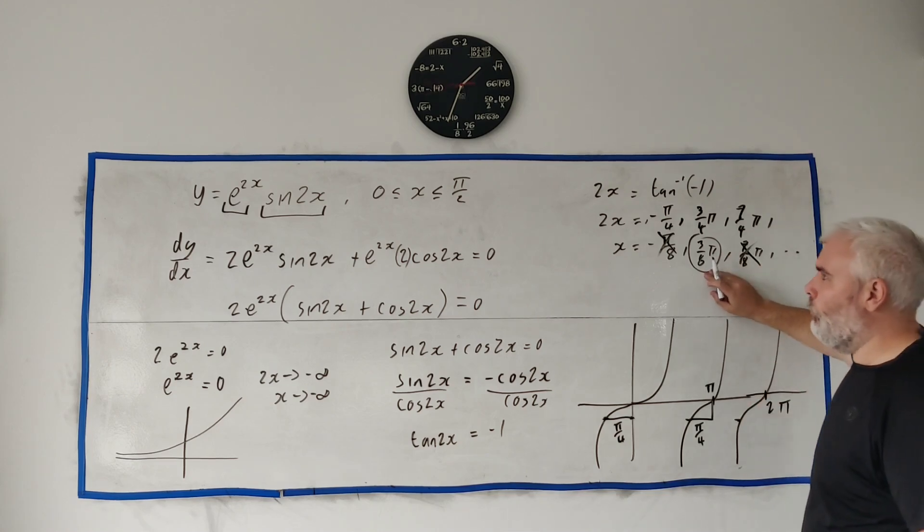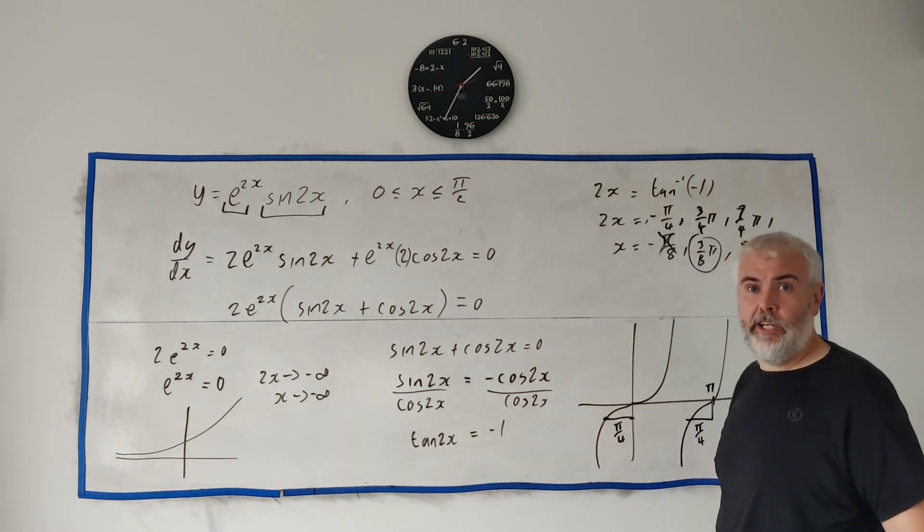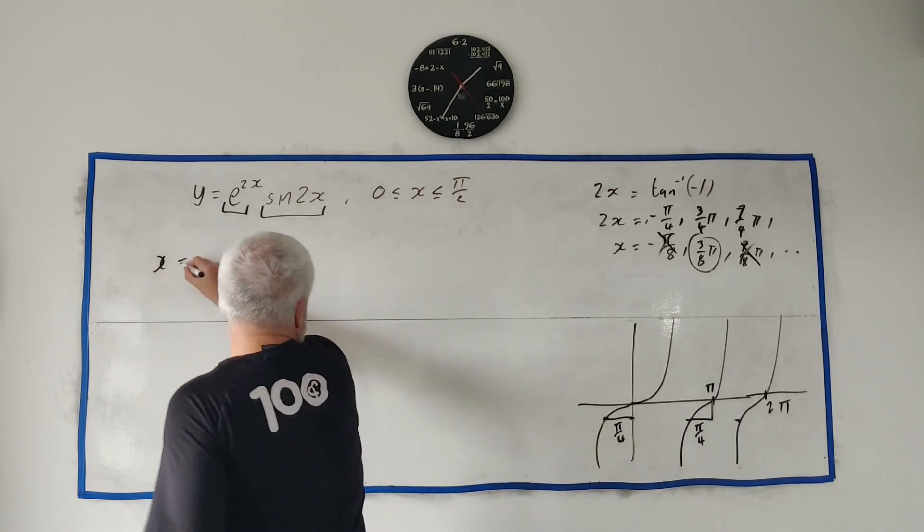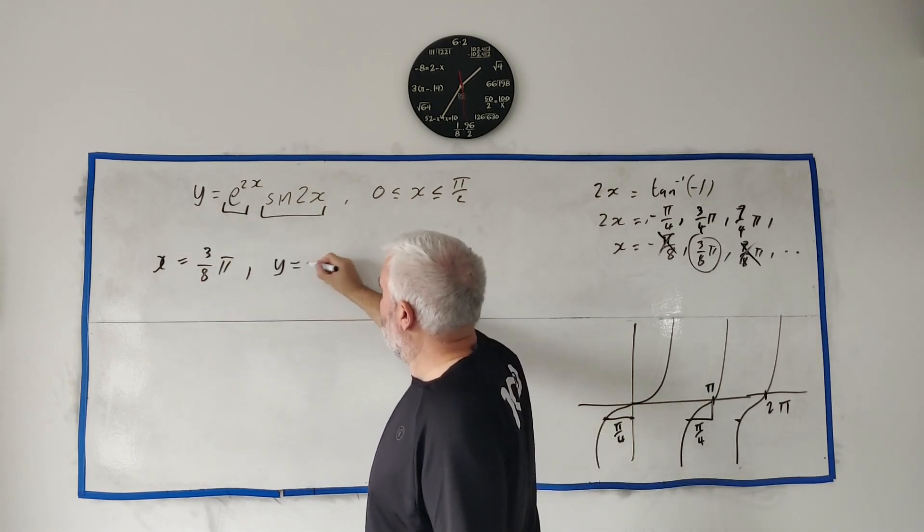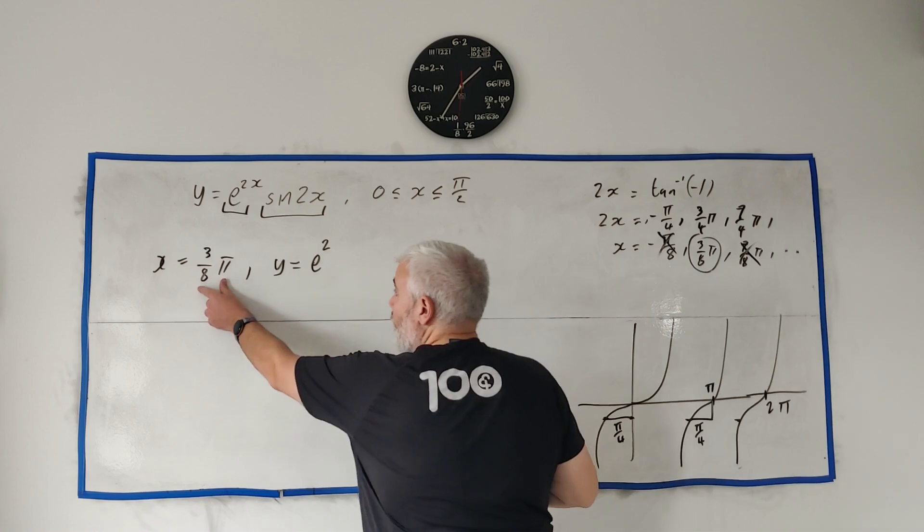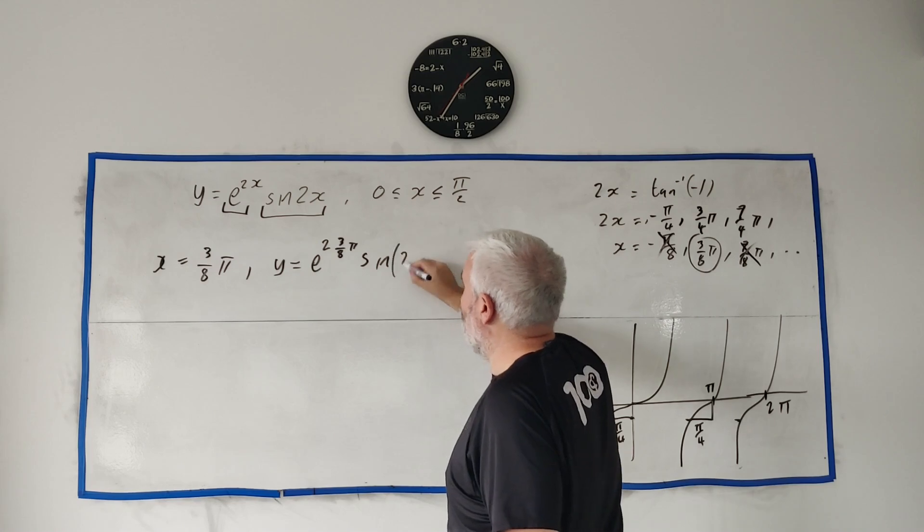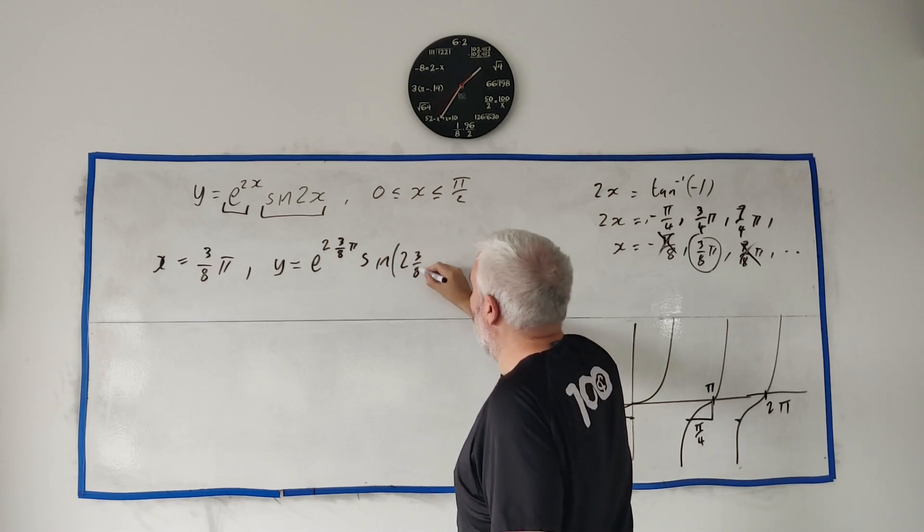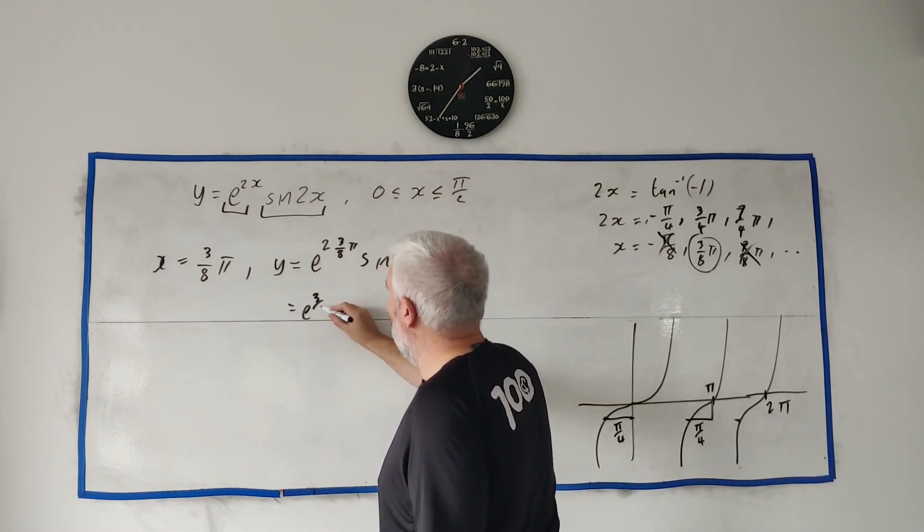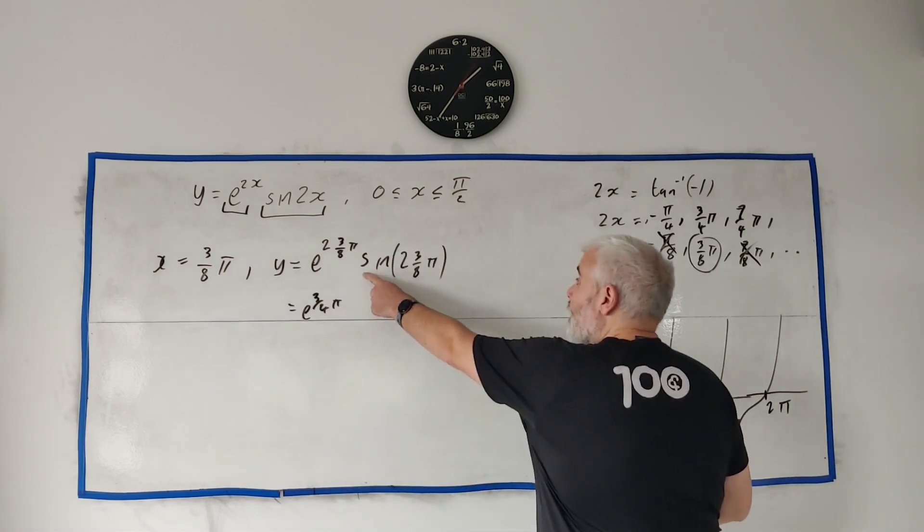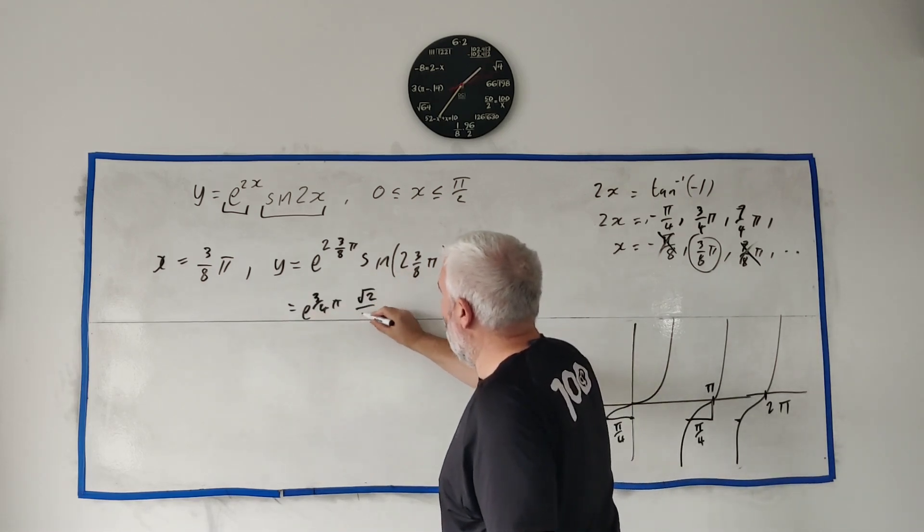But we didn't just want the x number. We want the whole coordinates. Let me clean the board, make a little bit of room, and we'll find out what y is. So we know x equals 3π/8. y is written right up here, and y equals e^(2 times 3π/8) multiplied by sin(2 times 3π/8). We can clean a lot of this up. This equals e^(3π/4) sin(3π/4). Put that into a calculator.